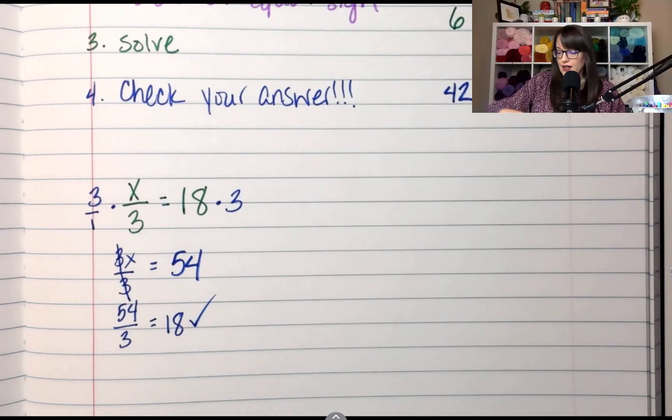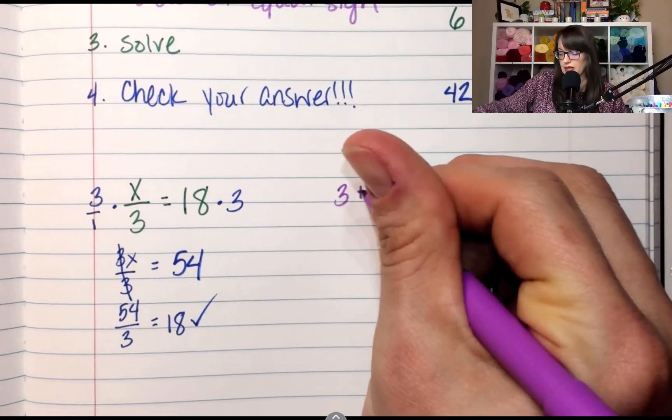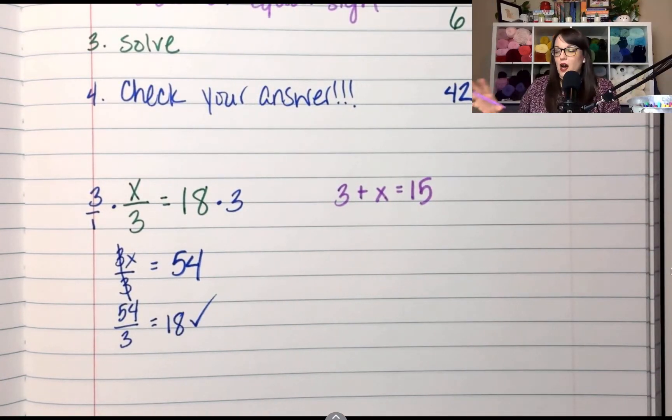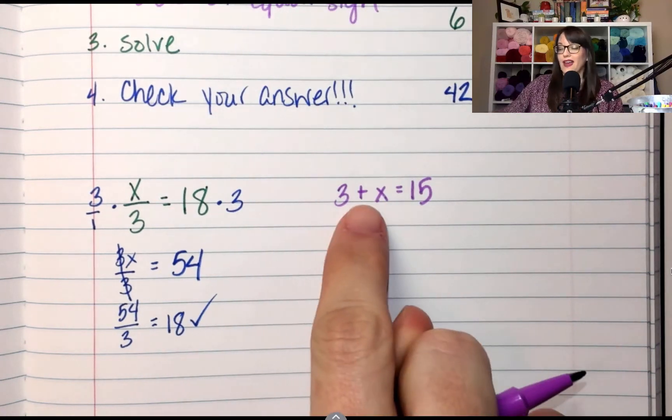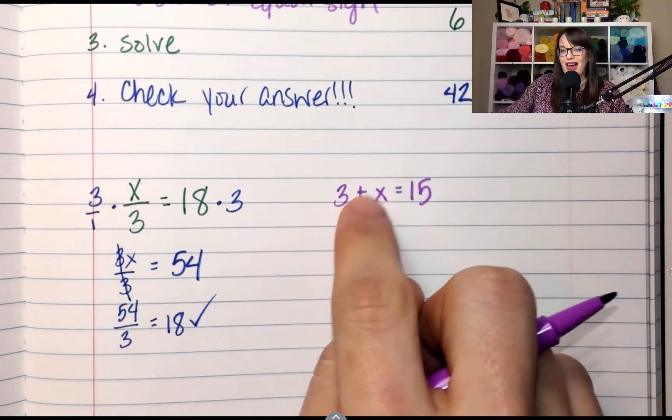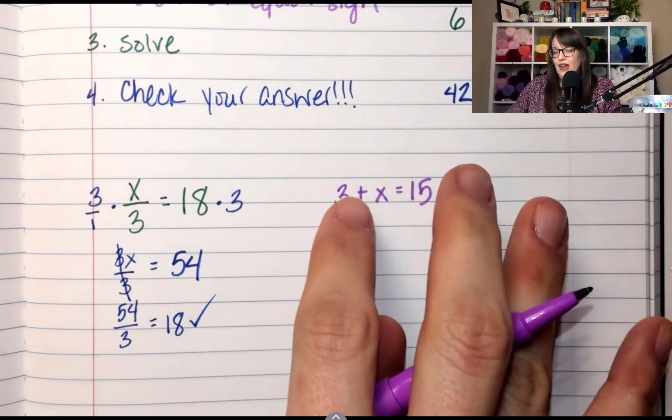All right, let's look at another one. If I have 3 plus X equals 15, what is the operation happening here? I'm adding 3. So even though it goes backwards, I'm still adding 3 to X. What is the opposite of adding 3?